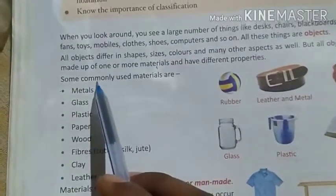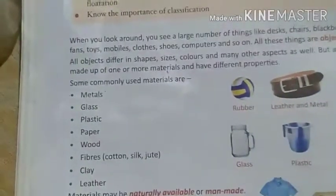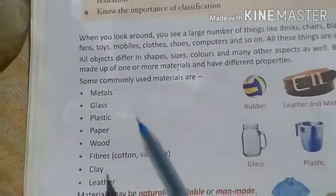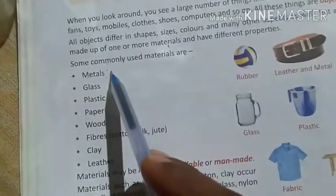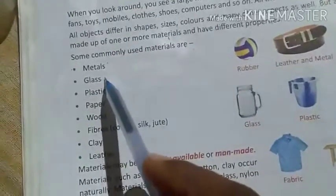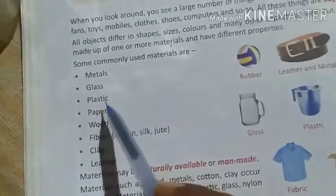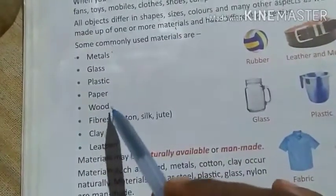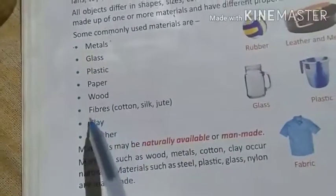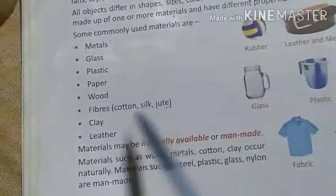Some commonly used materials — commonly material kinkin cheezon se bante hain, vo dekhte hain. Firstly metal — hamare ghar mein bahut si cheezein metal ki hoti hain. Glass — jaise window glass ki banate hain. Then plastics — plastic ke toy hote hain. Paper ke bhi hote hain. Wood ka door hota hai. Then fiber — cotton, silk, jute — last chapter mein bhi humne yeh learn kiya hai.